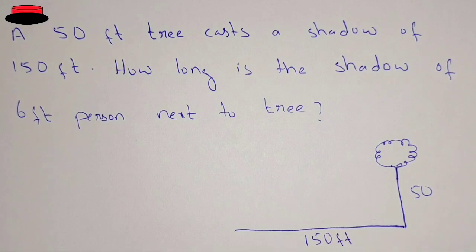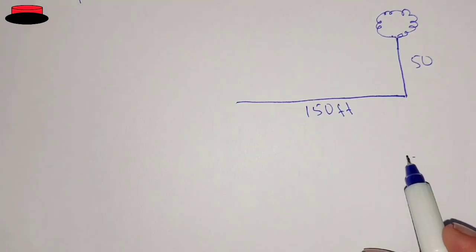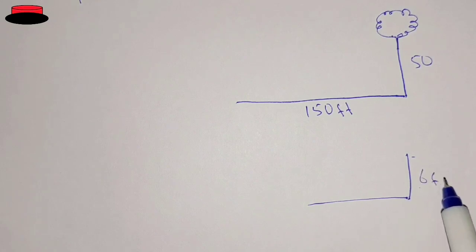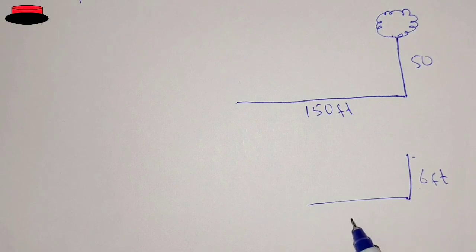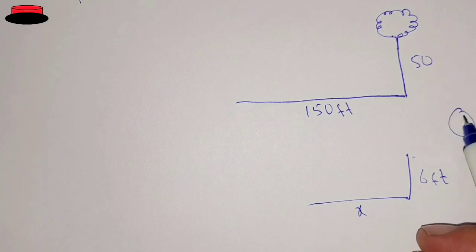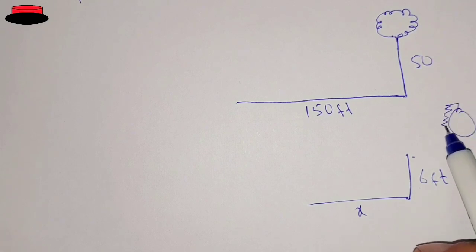Now we draw the figure of the person. The person is standing next to the tree; this is their height, which is given as 6 feet. We have to find out the shadow of the person, which is not given, so let's call it x. And this here represents the sun.